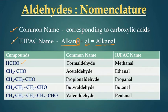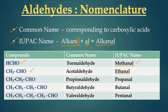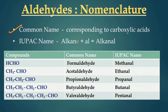For example, the first compound HCHO contains only one carbon. The alkane with one carbon is methane, so we write methane and replace the letter 'e' with 'al' — the name becomes methanal. Similarly for two carbons, ethane becomes ethanal. According to this rule, three carbons gives propanal, four carbons gives butanal, and five carbons gives pentanal.